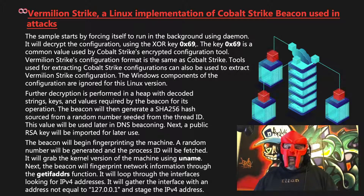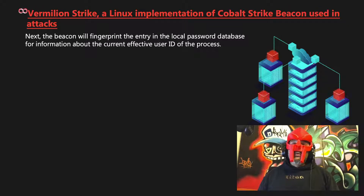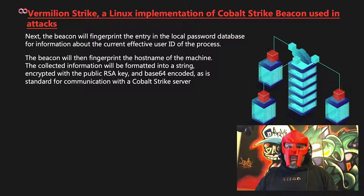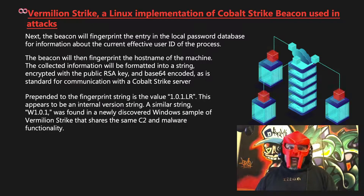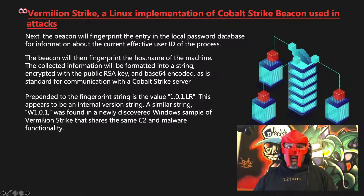It will loop through the interfaces looking for IPv4 addresses, gathering any interface with an address not equal to 127.0.0.1 and staging the IPv4 address. The beacon will also fingerprint the entry in the local password database for information about the current effective user ID of the process, and fingerprint the hostname of the machine. The collected information will be formatted into a string, encrypted with the public RSA key, and Base64 encoded for communication with the Cobalt Strike server. Pre-pended to the fingerprint string is the value 1.0.1.LR, which appears to be an internal version string. A similar string, W1.0.1, was found in a newly discovered Windows sample sharing the same C2 server — LR likely stands for Linux Red Hat and W for Windows.